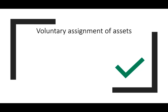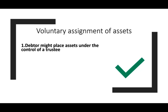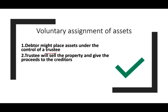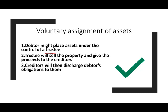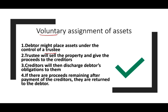The last option is voluntary assignment of assets. Here, the debtor places assets under the control of a trustee, who will sell the property and give the proceeds to the creditors. Both parties must agree to this arrangement. If any remaining money is left after the sale proceeds are distributed, it goes back to the debtor's business. This is essentially an introduction to Chapter 7 and Chapter 11.